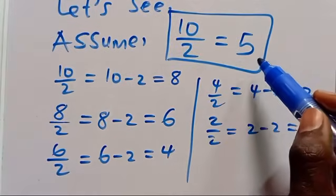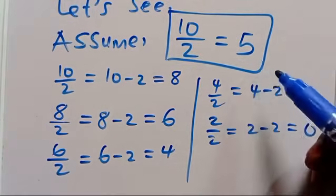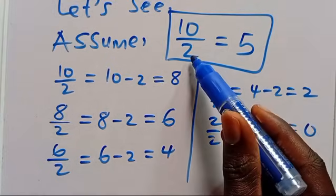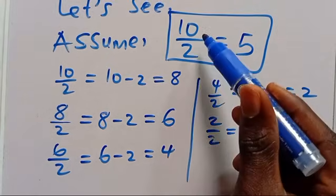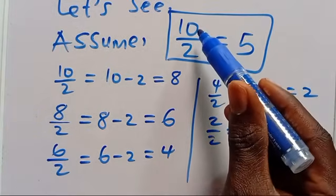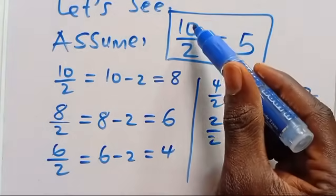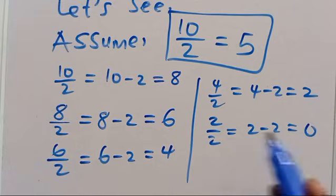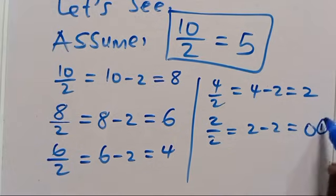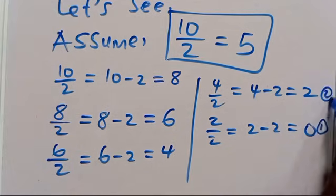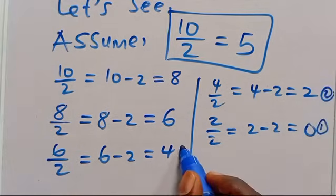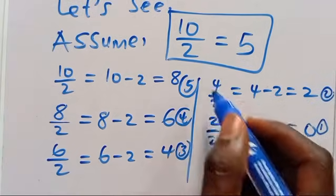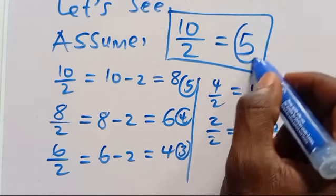When we say 10 divided by 2, it means how many bundles of 2 are we going to see in 10, which is 5. That's why when we count: 1, 2, 3, 4, 5 — that's why we have the answer to be 5.